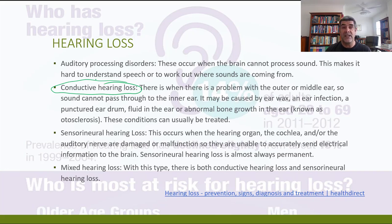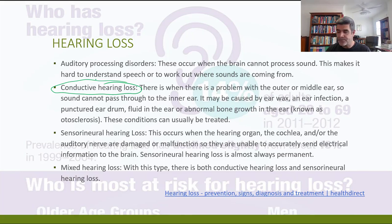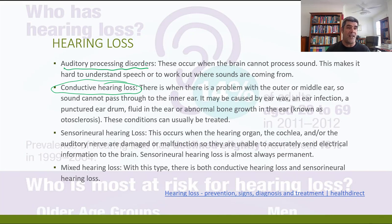Simple treatments are often enough, like cleaning out the earwax with a syringe — it's a large syringe but very effective, and often your hearing improves at that very moment. A second type is auditory processing disorders — this is when your brain can't process the sound. Auditory processing means we're not able to understand speech or work out where it's coming from. There's a problem with interpretation, with what's actually happening in the brain to process that information.